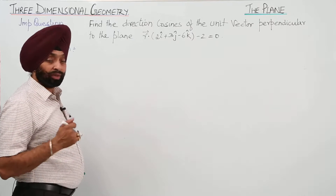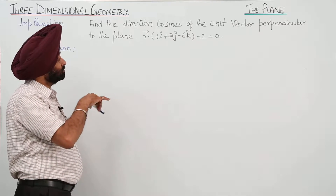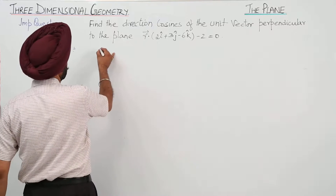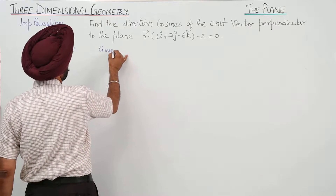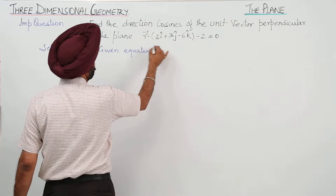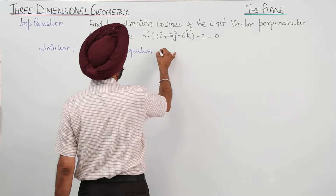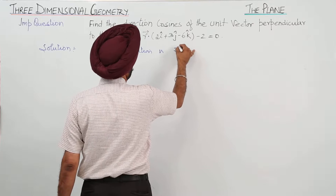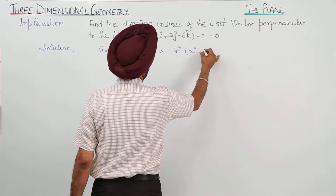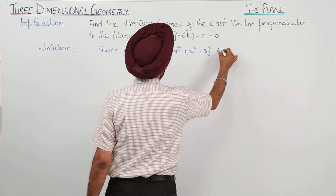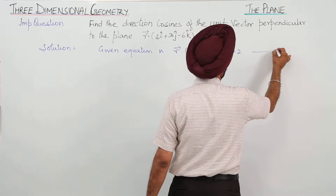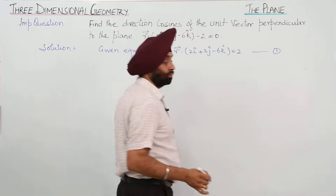The equation of a plane is given and we have to find the direction cosines of the unit vector perpendicular to the plane. The given equation is: vector r dot (2i cap plus 3j cap minus 6k cap) equals 2 — call this equation 1.